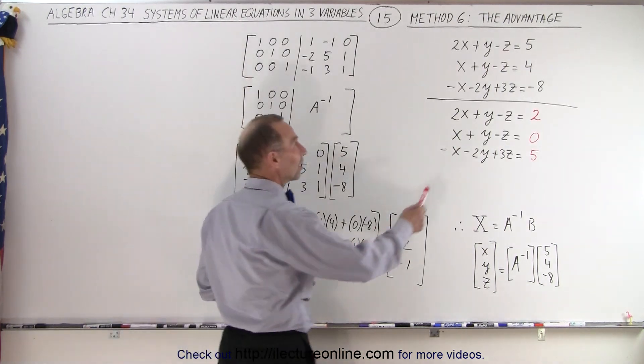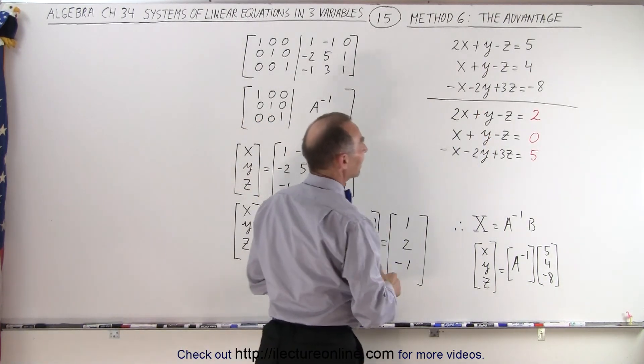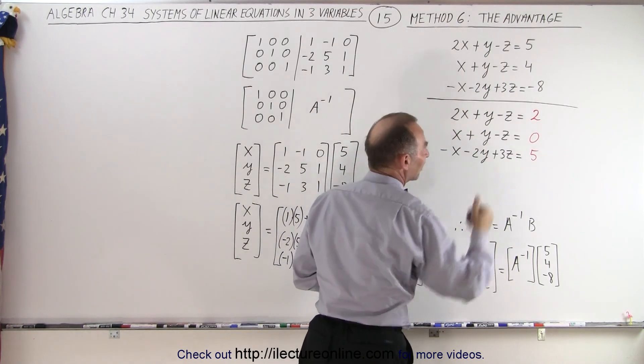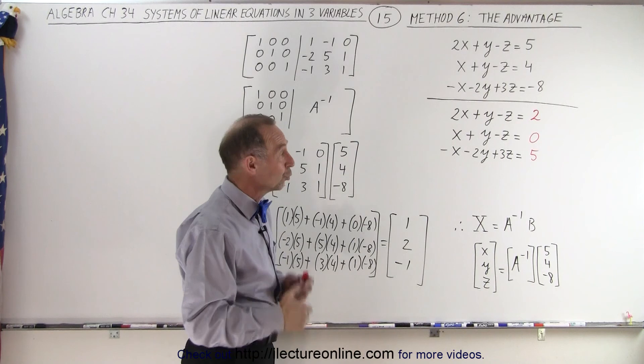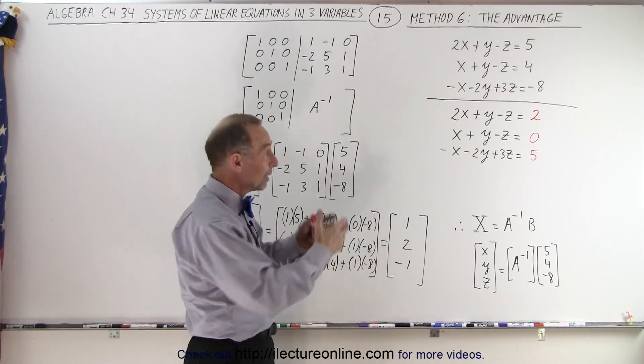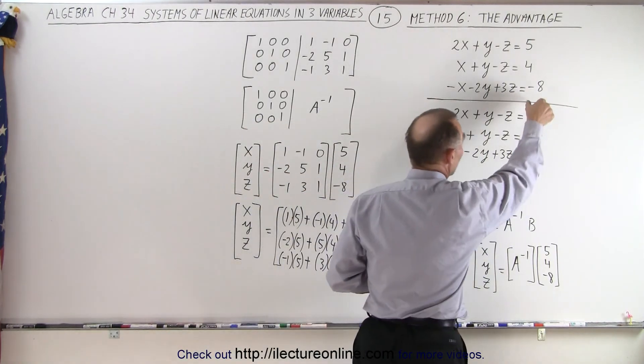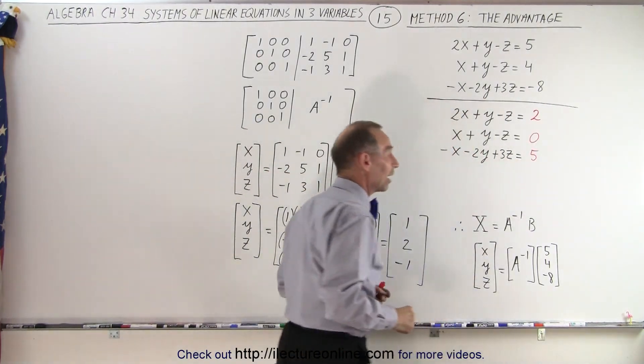So this was the original set of equations we're dealing with. Let's say that the left side stays exactly the same, but let's say the right side changes. Now, normally, that would take a lot of work to do that one again, and maybe we have a whole bunch of those where the only thing that changes is the numbers on the right side of the equal sign.